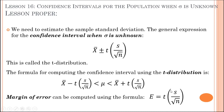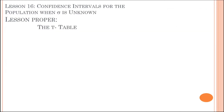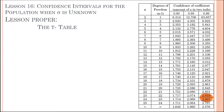Now, how do we get the t-value? We have the z-table, but we also have the t-table. How do we use the t-table? What does it look like?